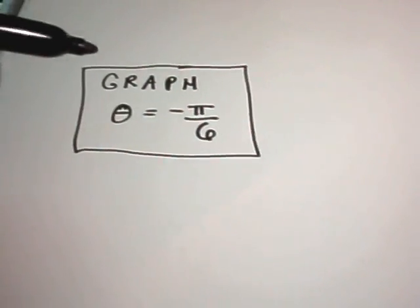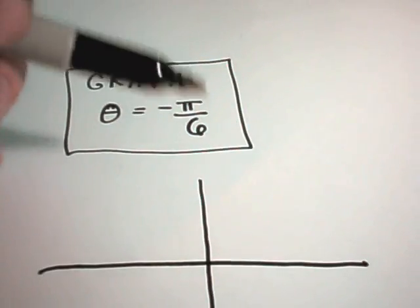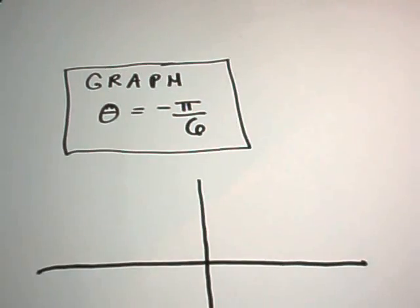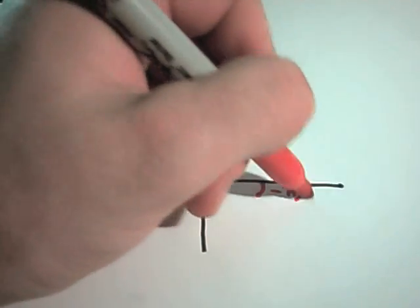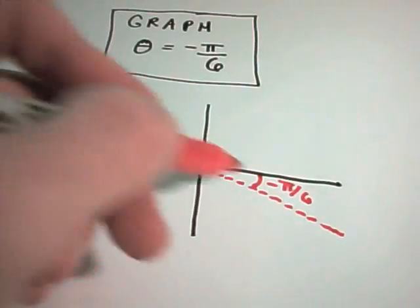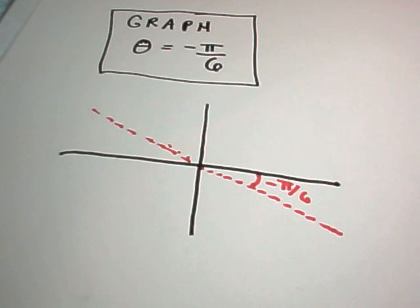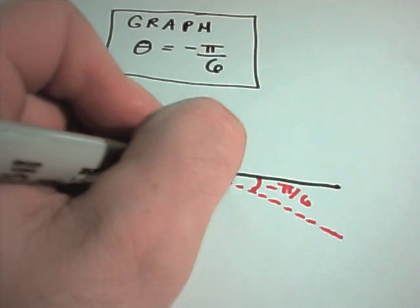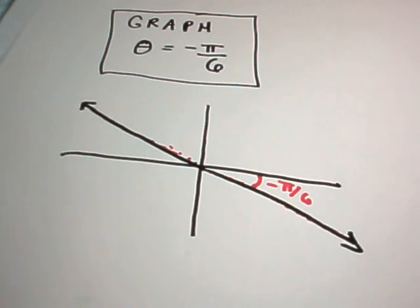So let's do two more kind of basic ones. Theta equals negative pi over 6. Well, this is just like the r equals 2 one. Everywhere that the angle is negative pi over 6, we don't care what the radius is. So let's draw the angle negative pi over 6. So negative pi over 6 would just go down a little bit. And the radius would just go out that way. And likewise, if you reflect it, if you have a negative r value, that's what the graph of theta equals negative pi over 6 is. It says everywhere there's an angle of negative pi over 6, we don't care what the radius is.